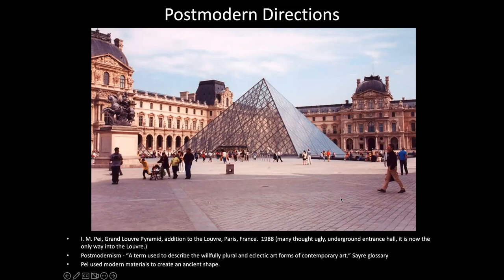Ironically, when the pyramid was first built, many thought it was ugly — saying the very modern, contemporary style didn't match the Louvre itself. That's ironic because the Louvre already represents many different styles over hundreds of years. Eventually people came to embrace it. It's a cool experience going inside and seeing how the glass changes the light. I.M. Pei used modern materials to create an ancient shape, reflecting what the museum does — spanning pieces from ancient Egypt all the way to today.